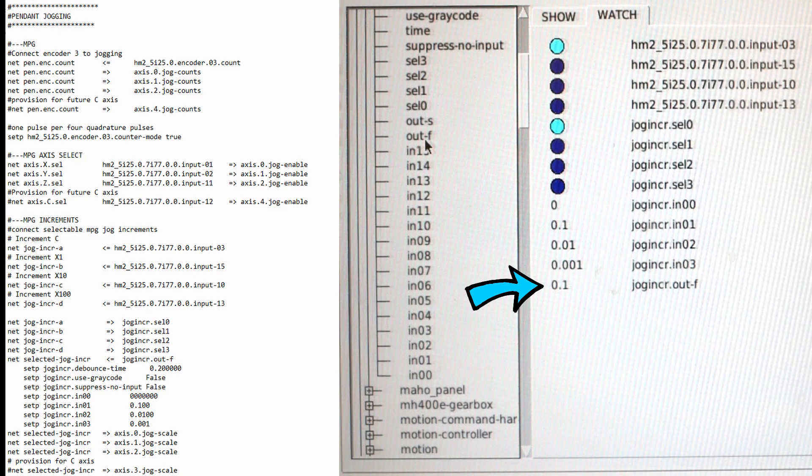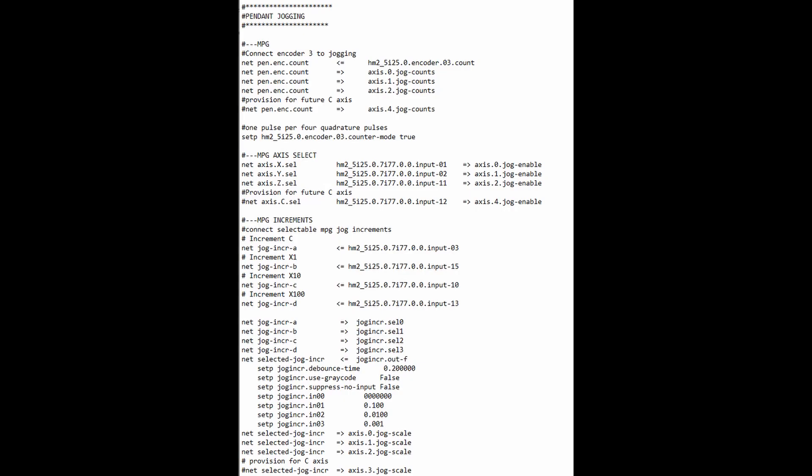Increment one should output zero, it outputs point one. Two should output point one, it does a tenth. Three should output a hundredth, it outputs zero, and four also zero. Any advice on troubleshooting that greatly appreciated.